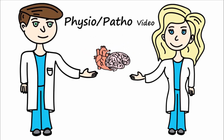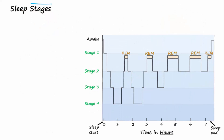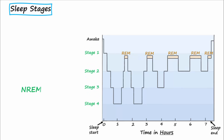Let's talk about the stages of sleep. This diagram shows the stages of sleep. The first four stages of sleep are non-REM. The first non-REM cycle takes around 60 to 90 minutes for completion.